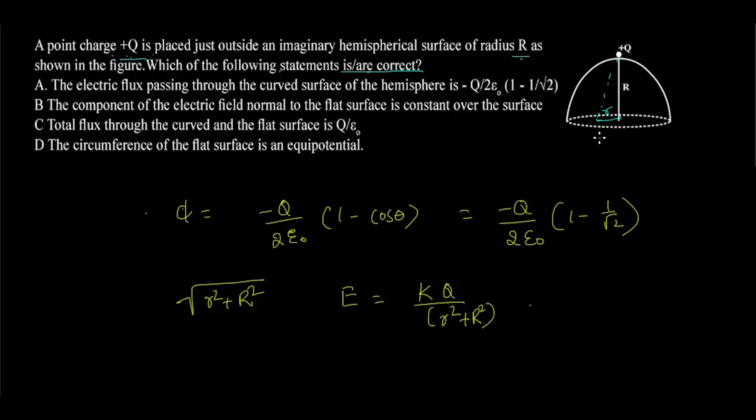Now the component of electric field normal to the surface is given by E into sin theta, that equal to E into R by R square plus R square power 1 by 2.